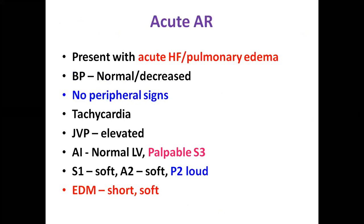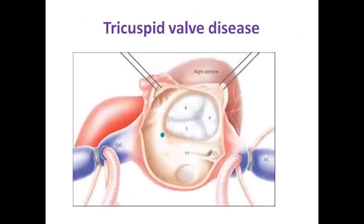In valve pathology, A2 may be soft due to damage to valve leaflets, and the early diastolic murmur is better heard in the left sternal intercostal space. Acute AR findings are entirely different — they represent acute heart failure or pulmonary edema. BP will be normal or decreased with no peripheral signs. Signs of heart failure include JVP elevation and palpable S3. The early diastolic murmur will be short and soft.